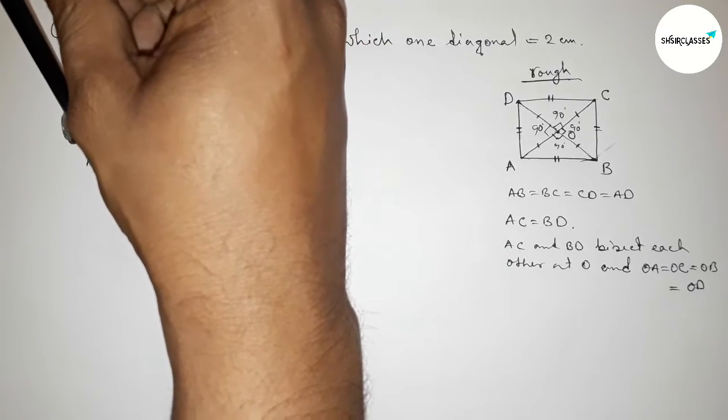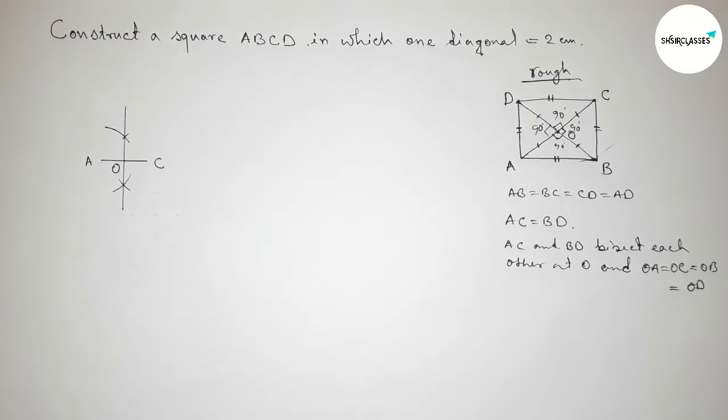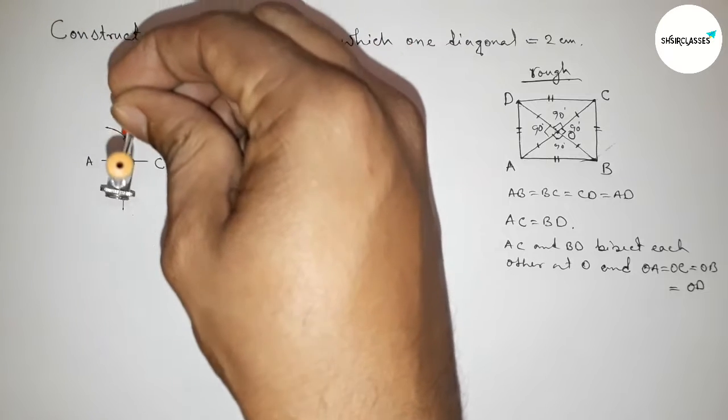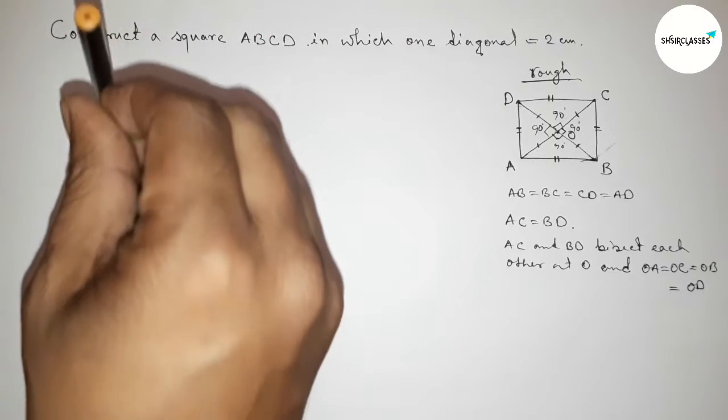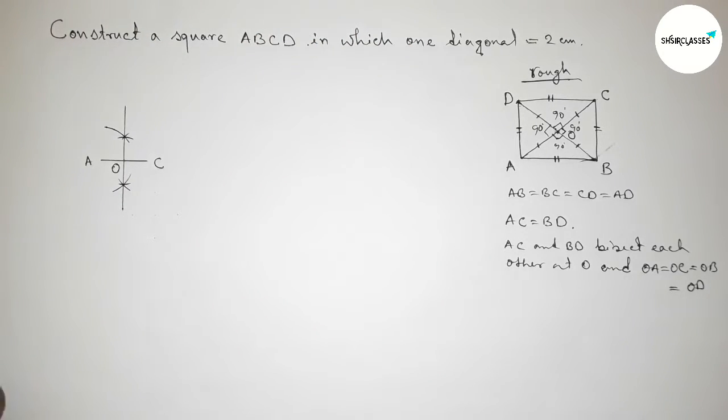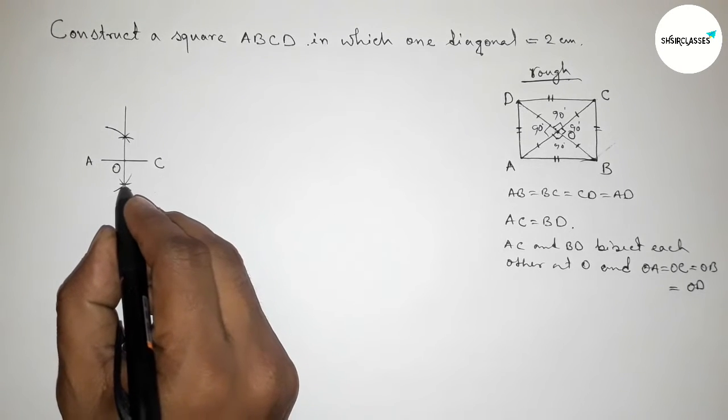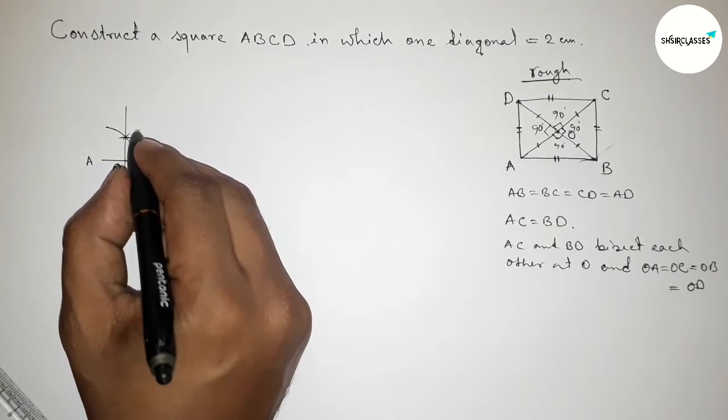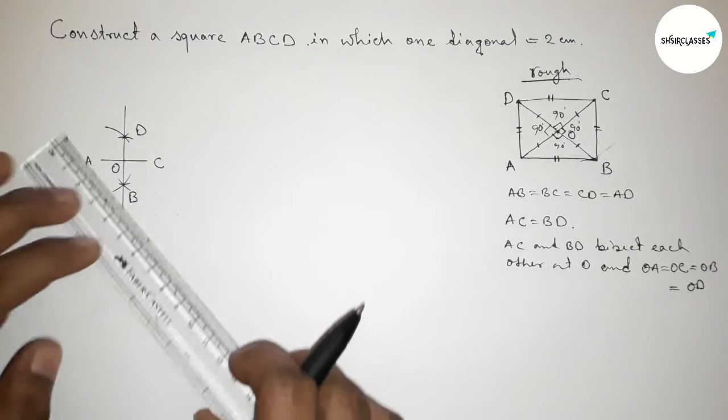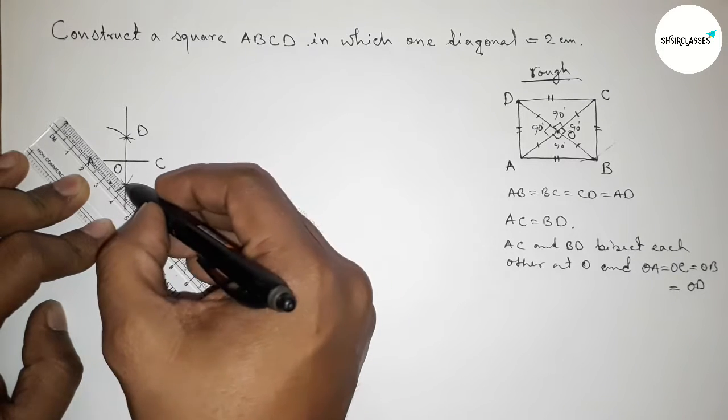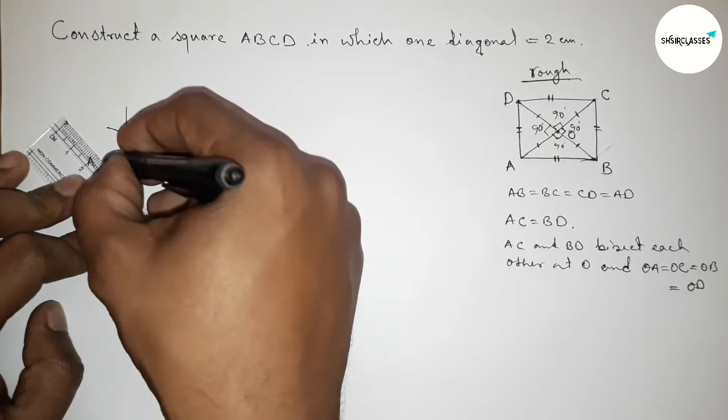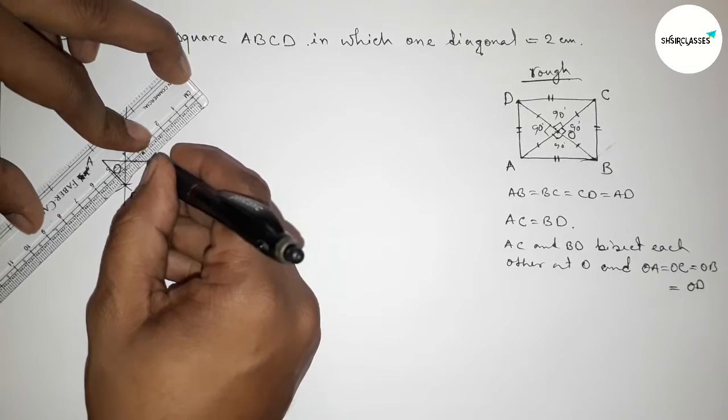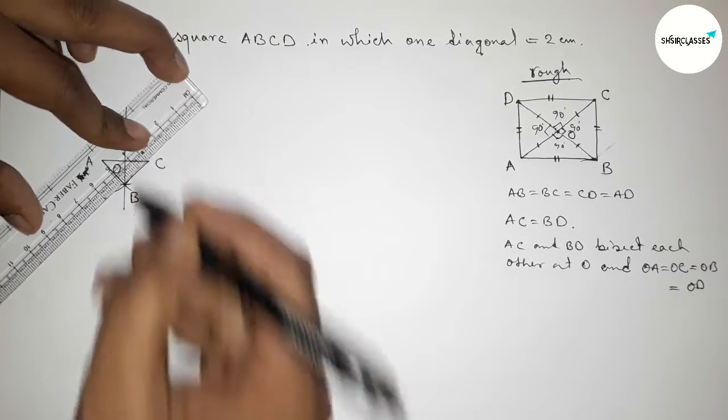Next applying the concept OA equals to OC, so first taking OC. OC obviously equals to OC, obviously equals to OA. Now putting the compass here with same length and cut here and cut here and cut here. So here we get two points, here one point and here one point.